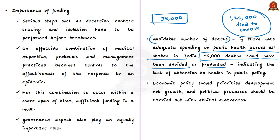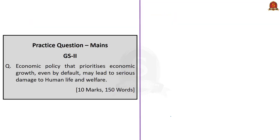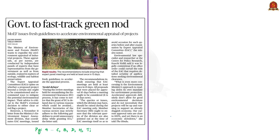The authors pose a strong criticism that these deaths indicate the lack of attention to health in public policy. They call for paying the required attention to health in public policy — economic policy should prioritize development and not just economic growth, and political processes should be carried out with ethical awareness. Adequate public health expenditure, medical infrastructure with the required number of doctors, sufficient funding and good governance are all equally important to prevent loss of lives, particularly during a pandemic.